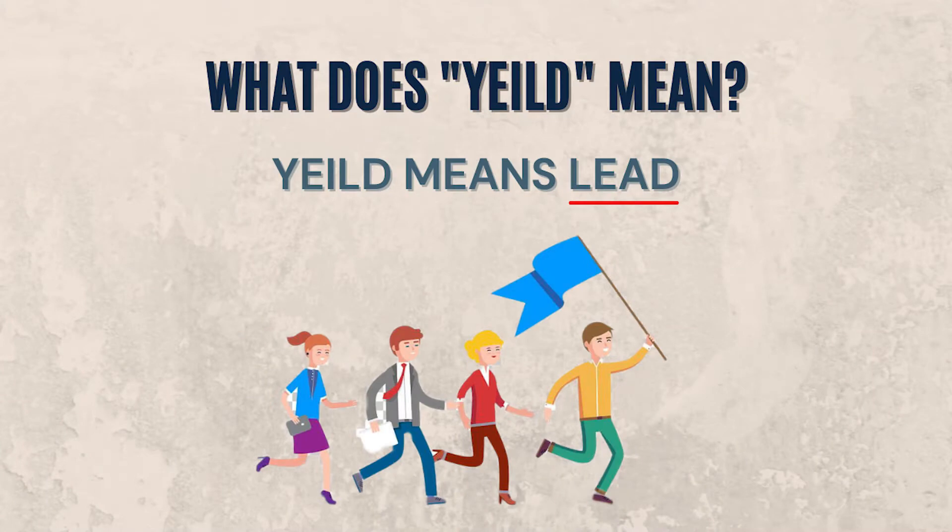First things first — what does God mean when he says 'don't let us yield to temptation'? What does yield mean? Well, the meaning of yield is to lead. You know when you're a group leader for a school activity, you make sure you lead your group into winning, right? So what is the prayer trying to tell us when it says 'don't let us yield to temptation'?